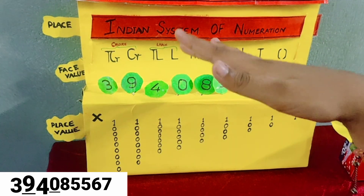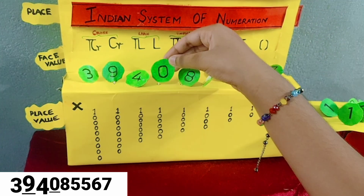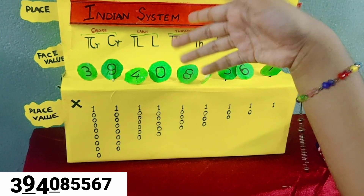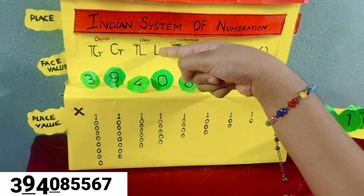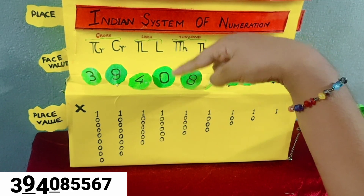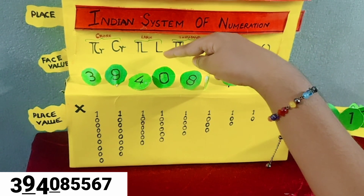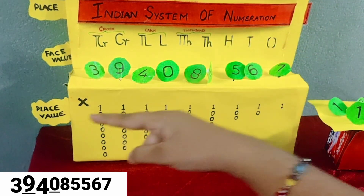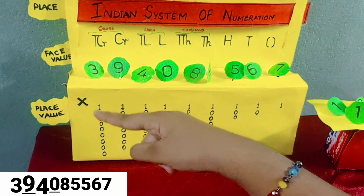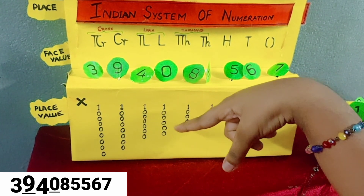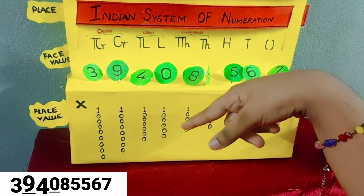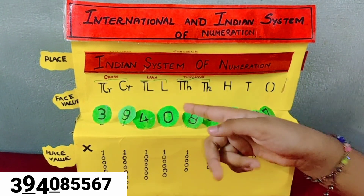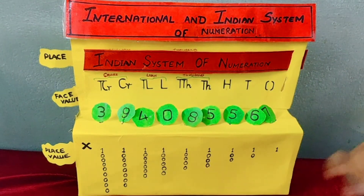Now let's see the other number. Look at his face — he is 0. Where is he sitting? The last place. Face value is 0. His place is lakh. Now let's see the place value: the place value is 0 multiplied by lakh, which is 0. Wherever 0 comes, the place value is always 0.